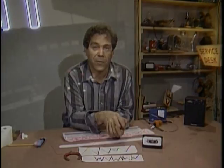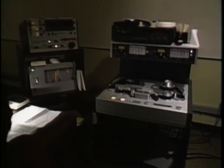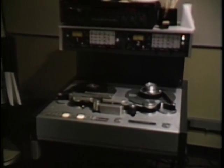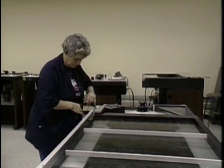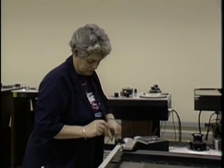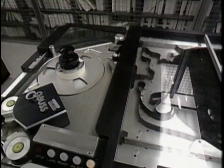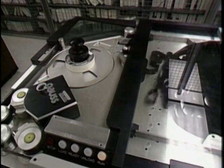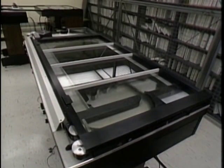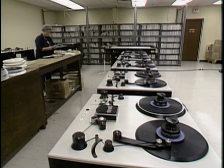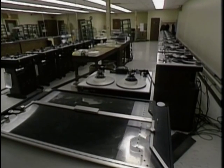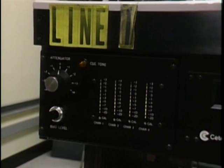Cassettes still require extra steps in the manufacturing process compared to records, but that too has come a long way. The album is prepared by recording it on a one-inch wide tape with four tracks — two stereo tracks going forward and two going backwards — exactly the same as they'll appear on the final cassette. The one-inch tape is put on a special player and formed into an endless loop. The tape loop plays back over and over, and its contents are recorded onto big spools of eighth-inch wide tape, all at 64 times normal speed. The eighth-inch tape receives all four tracks simultaneously.